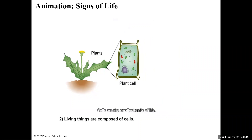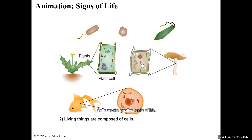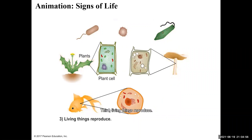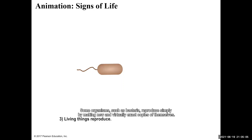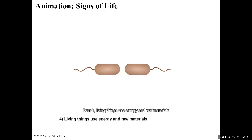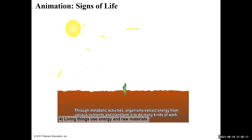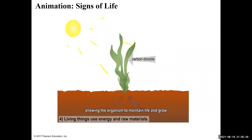Living things are composed of cells — the smallest units of life. Some organisms have only a single cell; others are multicellular. Humans, for example, are composed of trillions of cells. Living things reproduce: they generate new individuals that carry some of the genetic material of the parents. Some organisms, such as bacteria, reproduce by making virtually exact copies of themselves. Living things use energy and raw materials — through metabolic activities, organisms extract energy from nutrients and transform it to maintain life and grow.